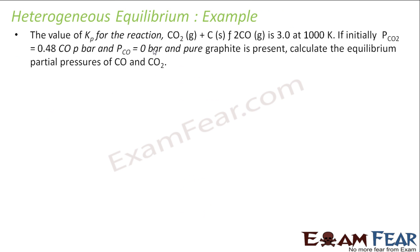We will take some examples of equilibrium. The value of Kp for this reaction: carbon dioxide gas plus carbon solid gives carbon monoxide. If you see this is gas, this is solid, this is gas, so there are two different phases here: solid and gas. So it is a heterogeneous equilibrium. For this equilibrium the Kp value is 3 at 1000 Kelvin. If initially the pressure of CO2 was 0.48 and the pressure of CO was 0 bar, we have to find the equilibrium partial pressure of CO and CO2.